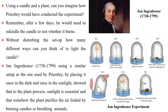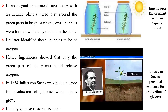Using a candle and a plant, can you imagine how Priestley would have conducted the experiment? Remember, after a few days he would need to rekindle the candle to test whether it burns. Jan Ingenhaus, using a similar setup as Priestley's, showed that sunlight is essential to the plant process, and that the plant purifies the air fouled by burning candles or breathing animals. In an elegant experiment, Jan Ingenhaus showed with an aquatic plant that small bubbles were formed around the green parts in bright sunlight but not in the dark. He later identified these bubbles to be oxygen. Hence, Ingenhaus showed that only the green parts of the plants could release oxygen.